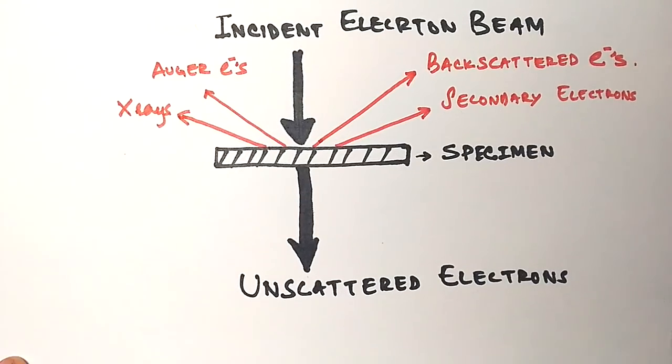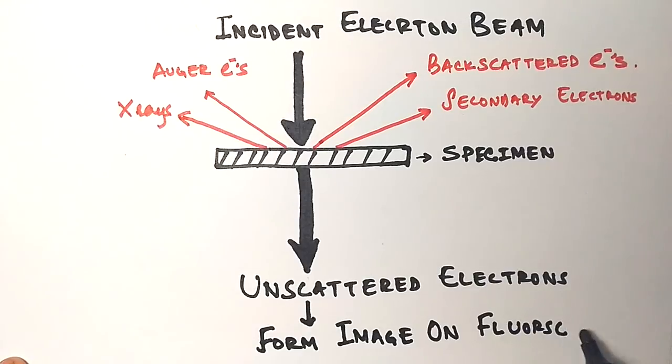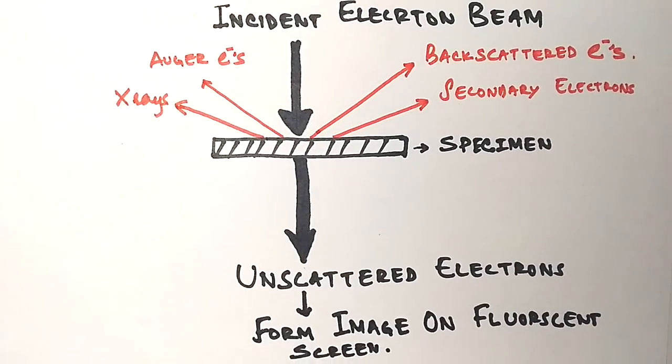The unscattered electrons that go through the specimen form the image. The image formed is 2D, not 3D which we will see in scanning electron microscopy. These images are formed on fluorescent screens.